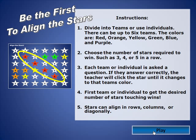Three stars in a row would make for a very short game, while five would be much longer and harder to achieve. Each team or individual is asked a question by the teacher or trainer. If they get it correct, the teacher clicks on the star until it changes to that team's color. The first team to get the desired number of stars touching wins. Stars can align in rows, columns, or diagonally.